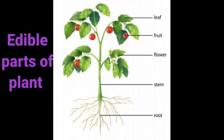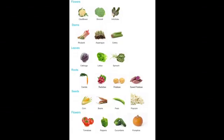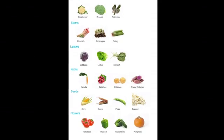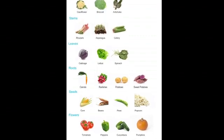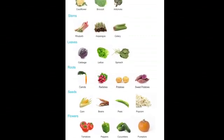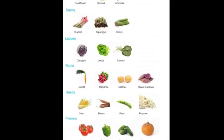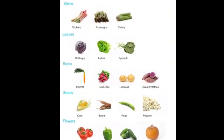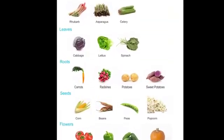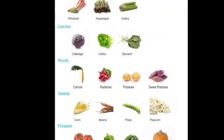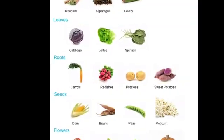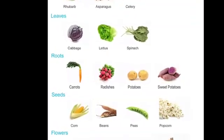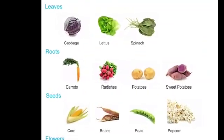Here are a few more examples of edible parts of a plant. One we did not discuss is seeds. Do we eat seeds of a plant? Yes — for example, mustard seeds, corn, peas, and so on. So all the parts of a plant mentioned here are edible parts.